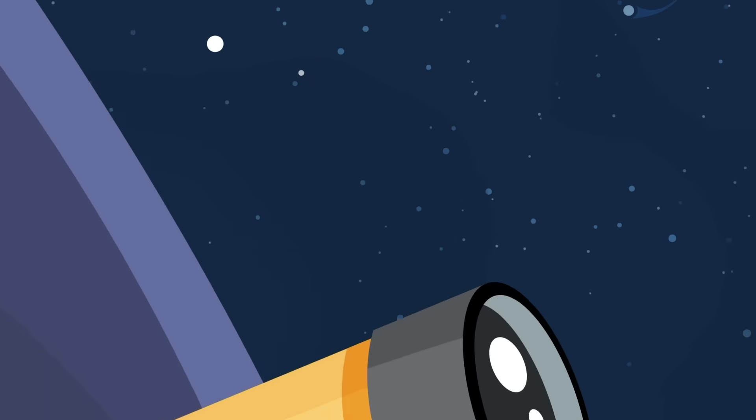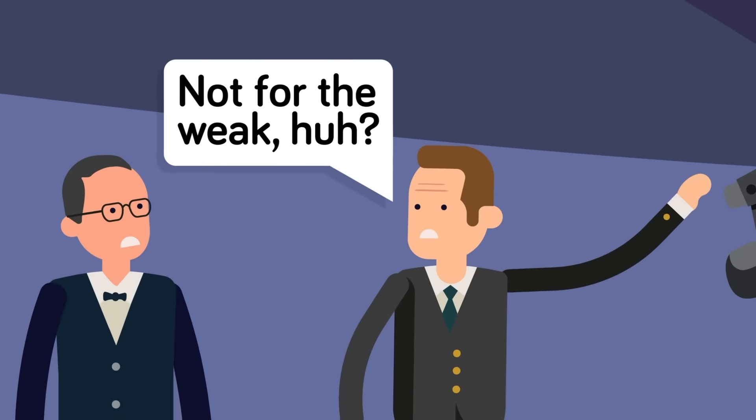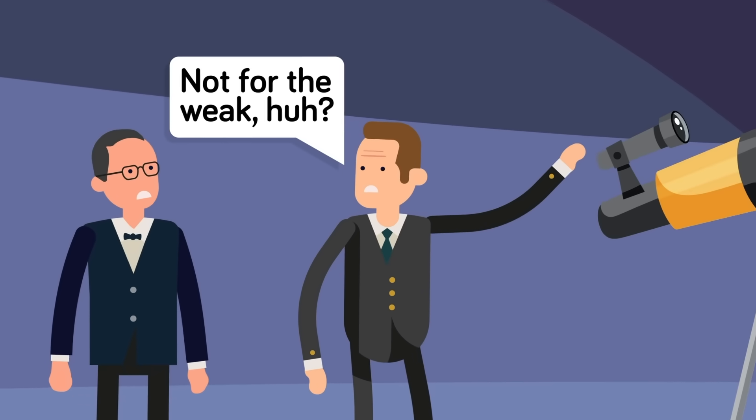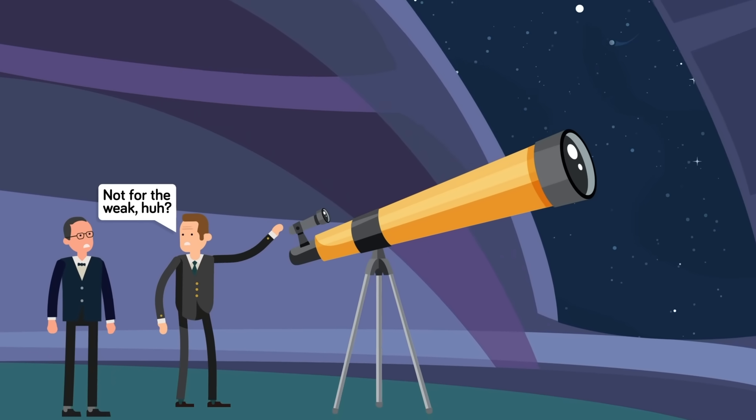Yet, as our ability to more precisely observe the distant limits of our own solar system improved, it was clear that there was a problem. First, we need to discuss just how incredibly difficult it is to even observe objects out past Pluto.